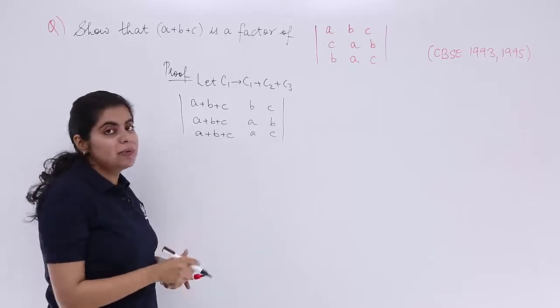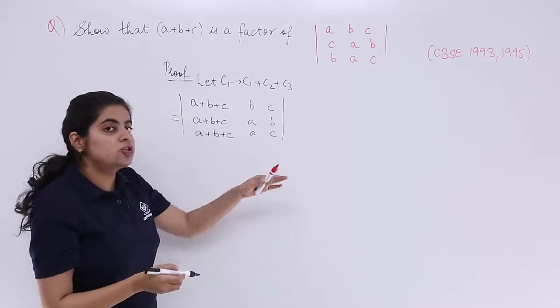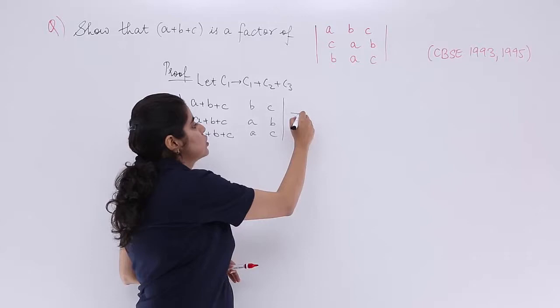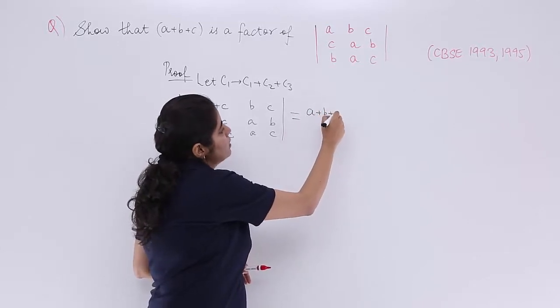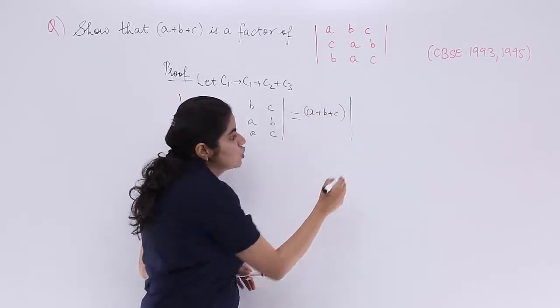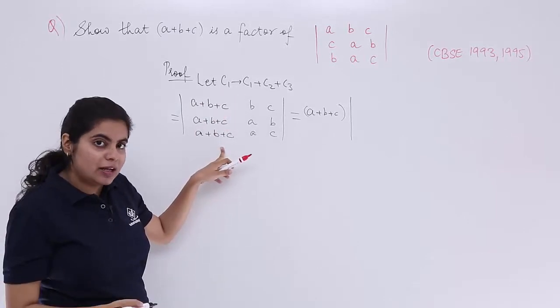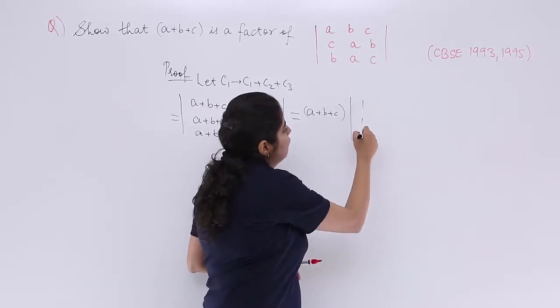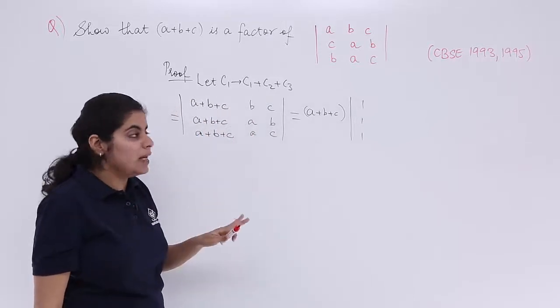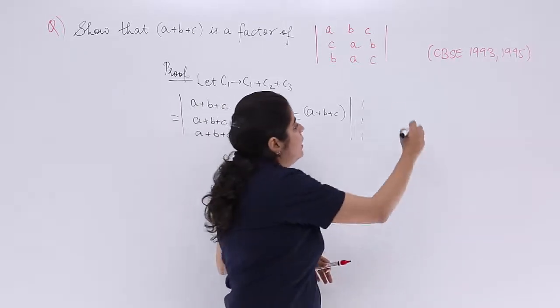Now when you see that you get a plus b plus c, it becomes easier to take things common. So let's take things common out. a plus b plus c is common and out. Inside what is left is from everywhere 1, 1, 1 is left. So I write 1, 1, 1. Rest copy as it is: b, c, a, b, a, c.